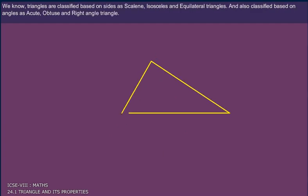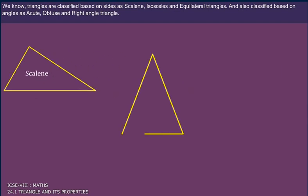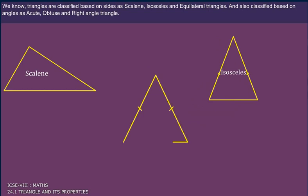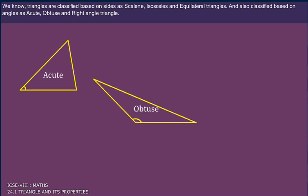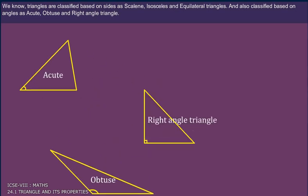We know triangles are classified based on sides as scalene, isosceles, and equilateral triangles, and also classified based on angles as acute, obtuse, and right-angle triangle.